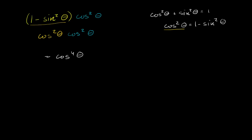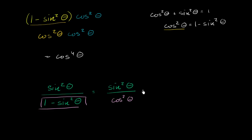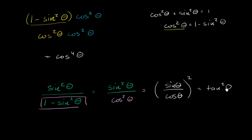Let's do another example. Let's say that we have sine squared theta over 1 minus sine squared theta. We already know that 1 minus sine squared theta is the same thing as cosine squared theta. So this becomes sine squared theta over cosine squared theta, which equals sine theta over cosine theta, the whole quantity squared — and since sine over cosine is tangent, this equals tangent squared theta.